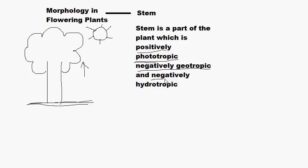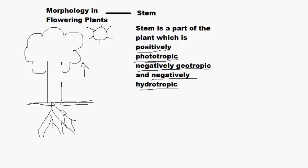What do we mean by negatively hydrotropic? You may recall that the roots of a plant reach down to the ground water level — they grow towards it. Hydro means water, and negatively hydrotropic means the stem grows away from the water level. Water is generally present below the stem, so the stem is growing away from the water.